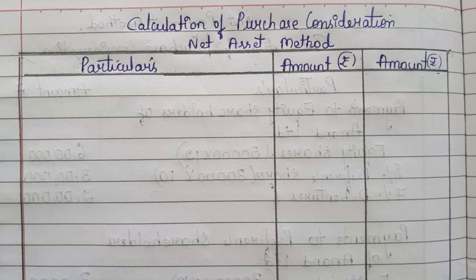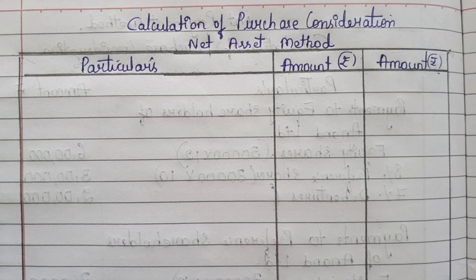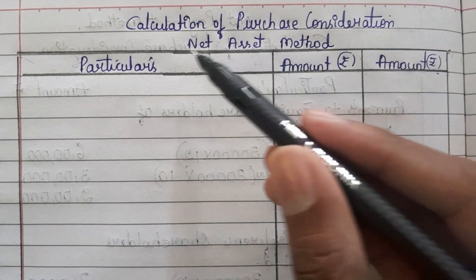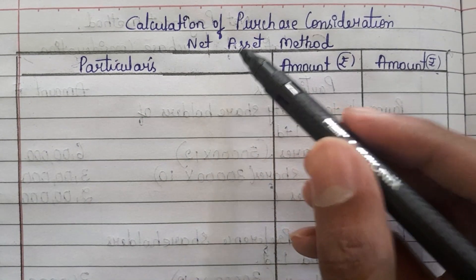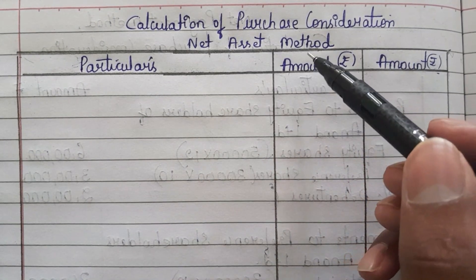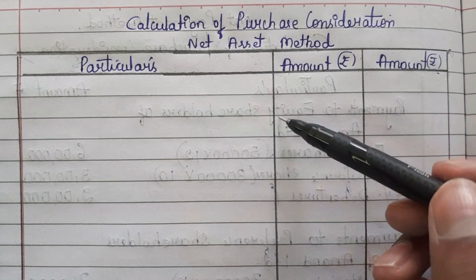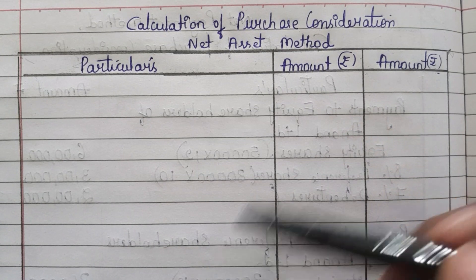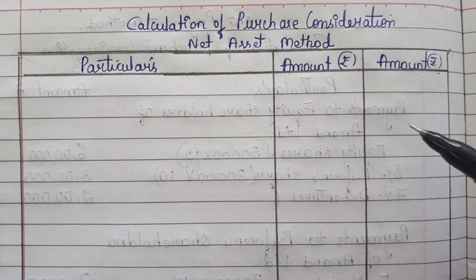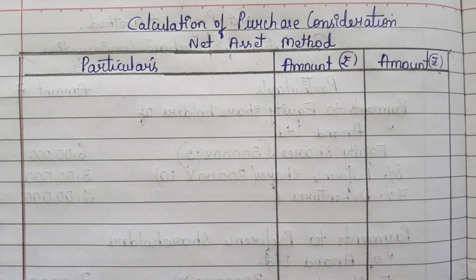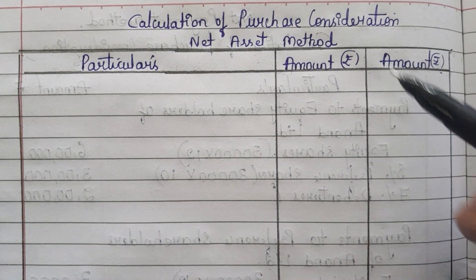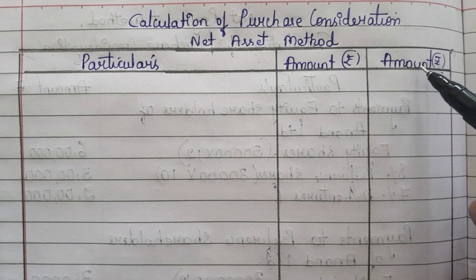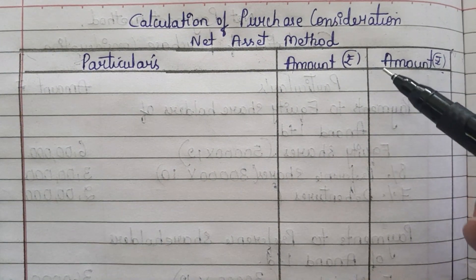Now let us start solving the problem. This is the format for calculating purchase consideration under the net asset method. There will be three columns — one is the particulars column and the other two are amount columns. Make sure that you write the rupees symbol.